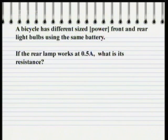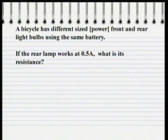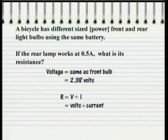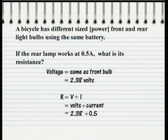Now for the second part of the question. We're told that the current through the rear bulb is 0.5 amps, and we've just worked out that the voltage both lamps are using is 2.38 volts. We can work out the resistance using Ohm's law again. The resistance R equals the voltage V divided by the current I. That's 2.38 divided by 0.5 equals 4.76 ohms.